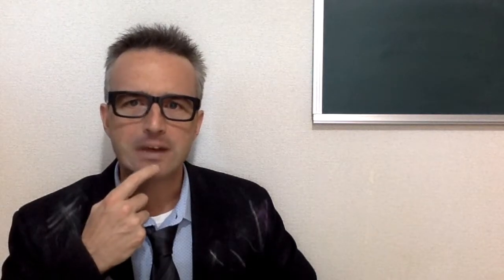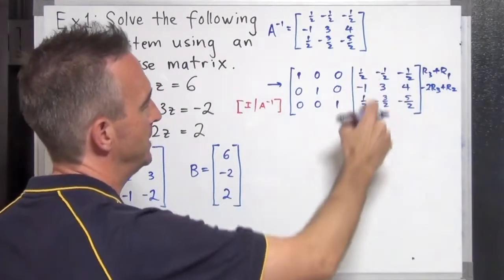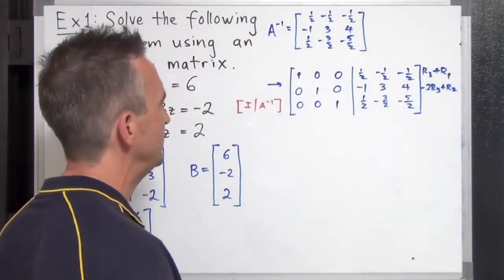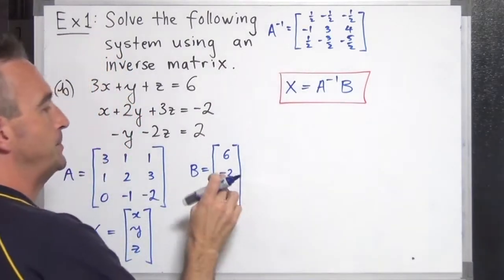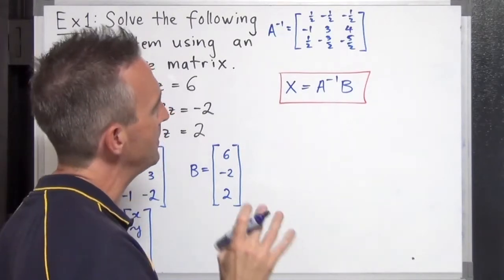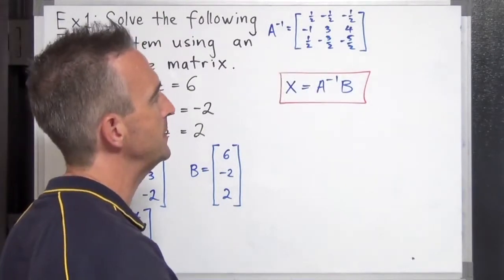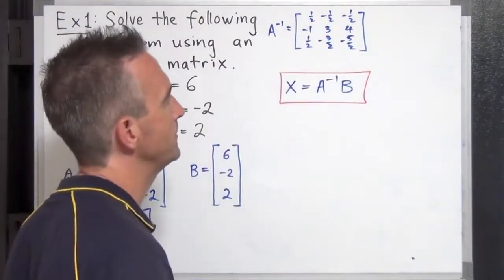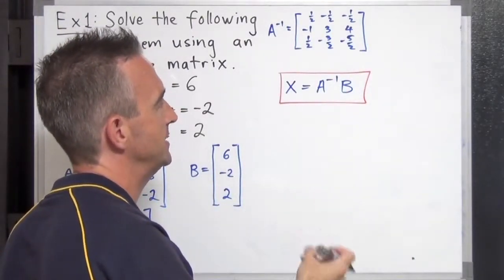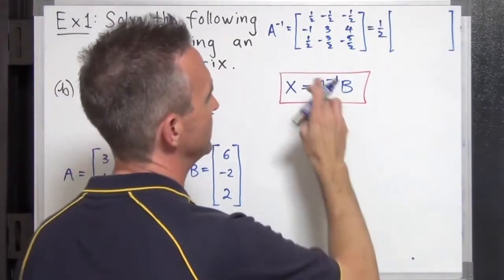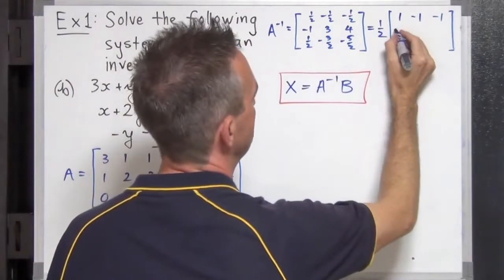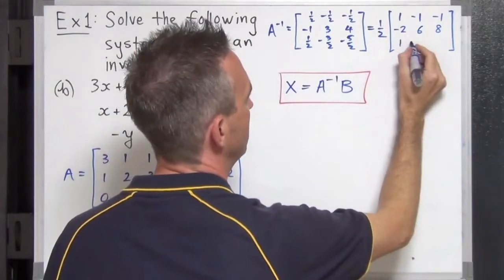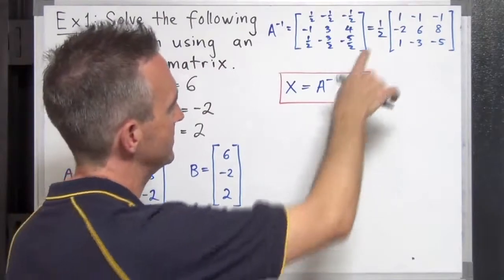We are finally done with Gauss-Jordan elimination. On the left we have our identity matrix and on the right we have our inverse matrix. We extract the inverse matrix. Since it contains fractions, I'll factor out one half so that inside the matrix we only have integers, making multiplication easier. Factoring out one half and multiplying everything inside by two gives us: top row negative 2, 6, 8 — wait, checking — and bottom rows with 1, negative 3, negative 5. This makes the upcoming matrix multiplication much cleaner.